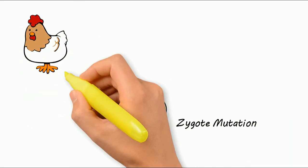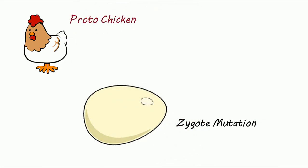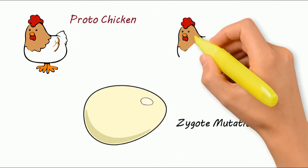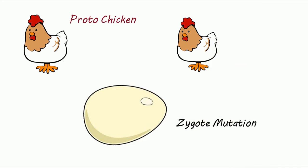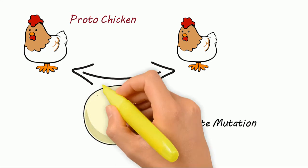So a creature very similar to a chicken, which we could call a proto-chicken, would have mated with another proto-chicken, and because of a small genetic mutation, created the first chicken which grew in an egg.